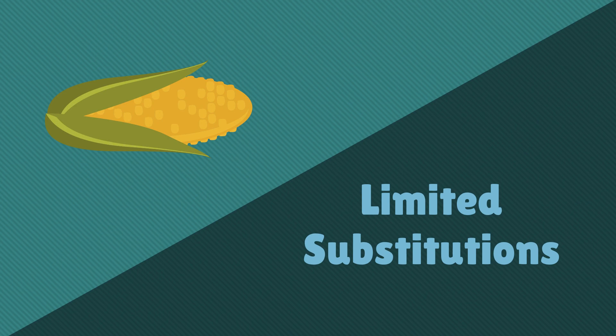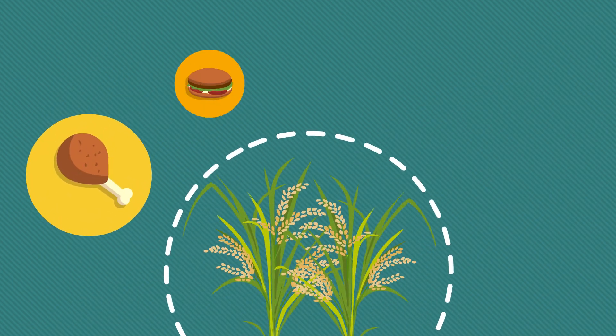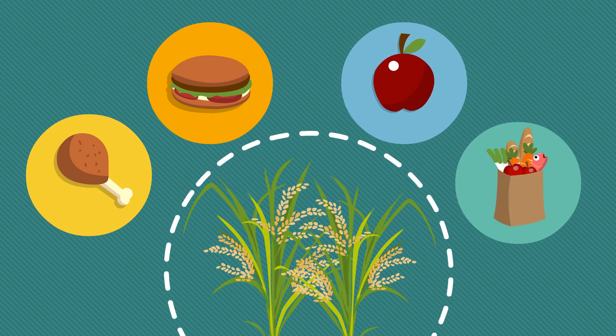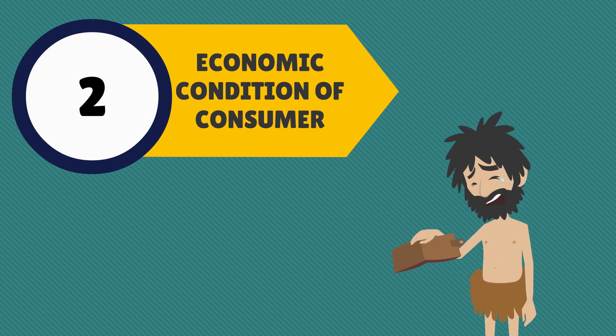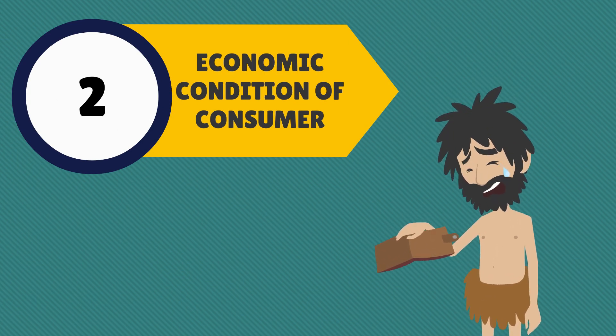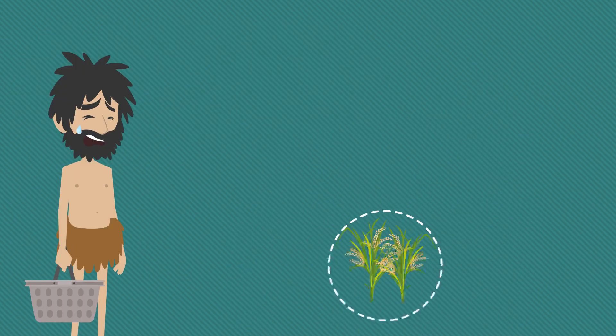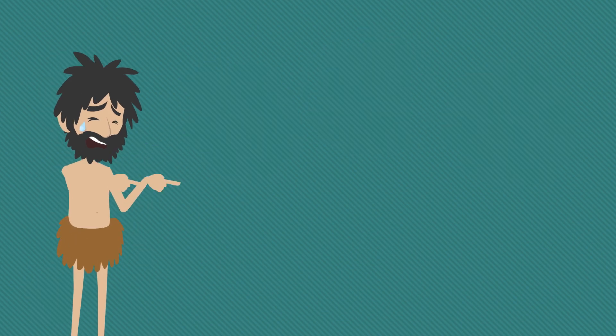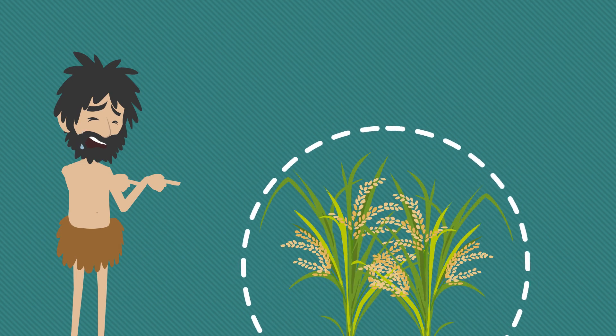A product can become a Giffen good only when certain conditions are met. First, the product must be a staple product, such as a food that has a limited number of substitutions available — for example, cheap rice doesn't have many substitutions in its price range. Second, the consumers must be poor enough that they can't afford to substitute the staple product for a higher quality product.